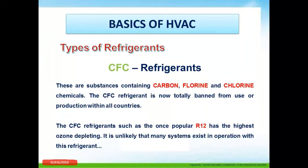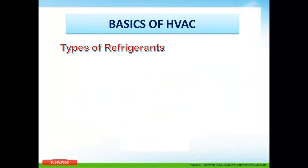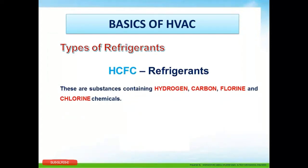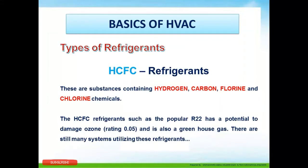CFC refrigerants are no longer used and are totally banned in all countries. HCFC refrigerants are substances containing hydrogen, carbon, fluorine, and chlorine. The HCFC refrigerant R22 has potential to damage the ozone layer and is also a greenhouse gas. R22 is already banned and is no longer being produced, though it is still found in existing systems in many countries and will need to be eliminated.